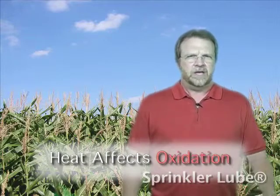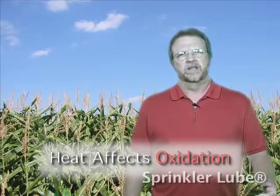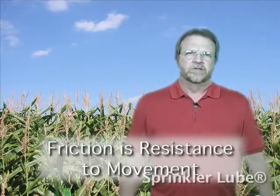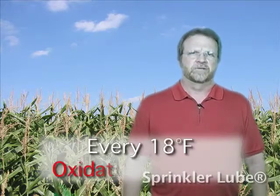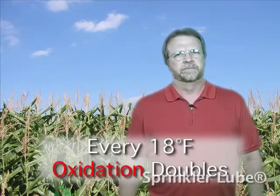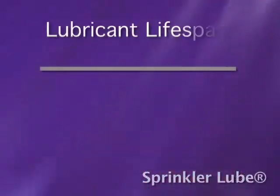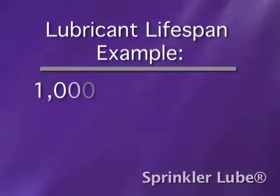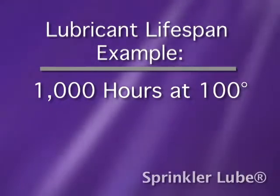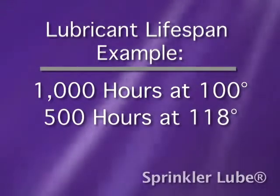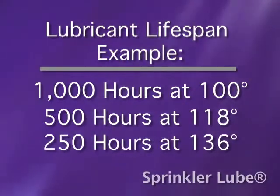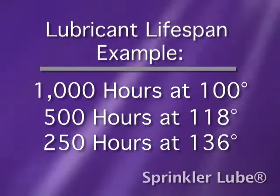The heat produced by the gearbox working also has an effect on oxidation. This heat is a by-product of friction — friction defined, as we all know, is resistance to movement. As temperature increases from friction, approximately every 18 degrees Fahrenheit, oxidation of your lubricant doubles. This means the life of your lubricant is cut in half with every 18-degree increase in temperature. For example, if the lubricant had a lifespan of 1,000 hours at 100 degrees, its life would be cut to 500 hours at 118 degrees, or 250 hours at 136 degrees. So heat plays an important role in acid action and oxidation rates, and they in turn are reducing the life of your gearbox.